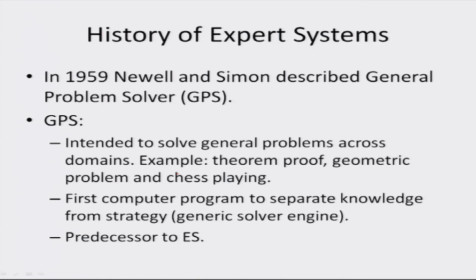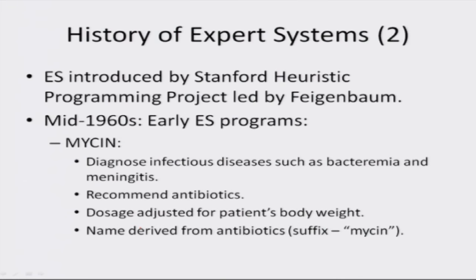Let us look into the history of expert systems. In 1959, Newell and Simon described the General Problem Solver, intended to solve general problems across domains — for example, theorem proof, geometric proof, and chess playing. It was the first computer program to separate knowledge (a set of rules and facts of a particular domain) from strategy (the procedure to solve a problem), and was a predecessor to expert systems.